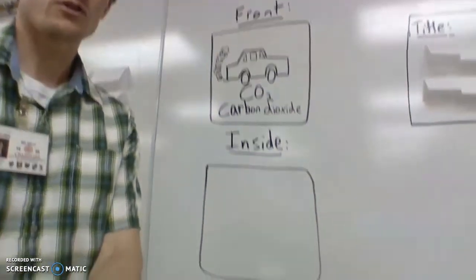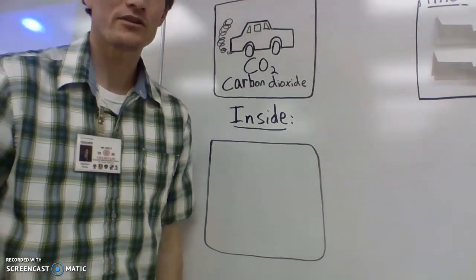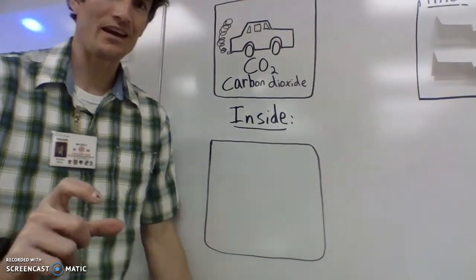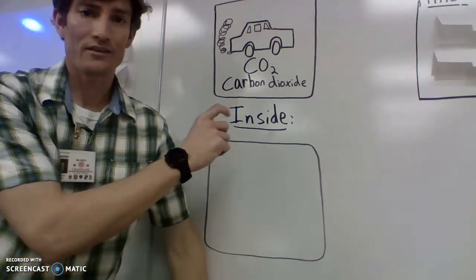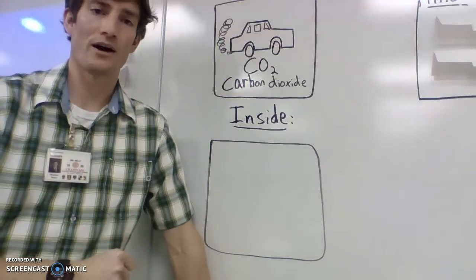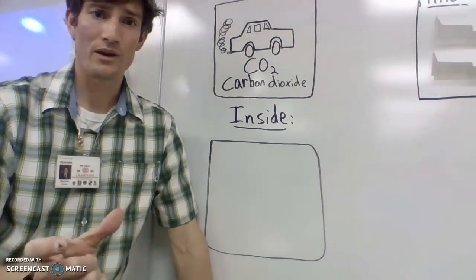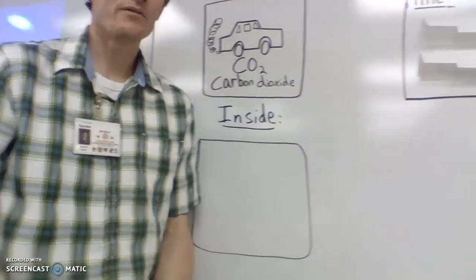Then when it comes to what goes on the inside, on the Canvas assignment, there is a description associated with each one of these reactants and each one of the products. There's three reactants, two products. There's also an arrow in between.